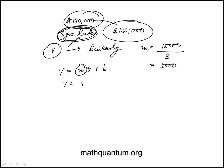So the equation is V equals $5,000 t plus b and then to find this we know at t equal to 0, V is $140,000 which means this b is $140,000.